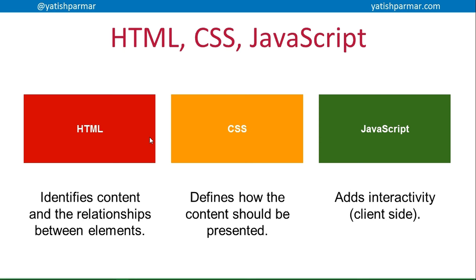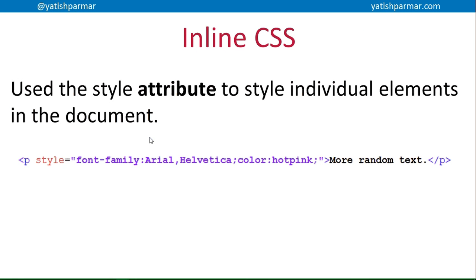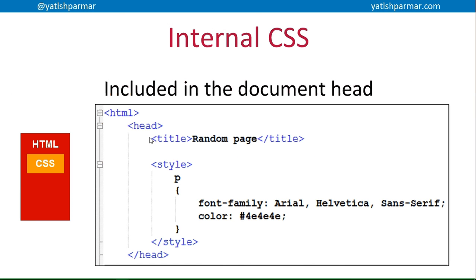The first way to use CSS is inline CSS, where you use a style attribute on a particular element in order to style it. You can see this paragraph has a style applied with a font of Arial, or if that's not available Helvetica, and a color of hot pink. The problem is that only that individual element is being styled, so if you wanted to change paragraphs across an entire website you could be spending months changing them all.